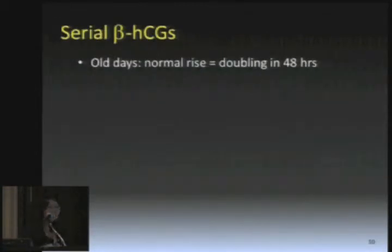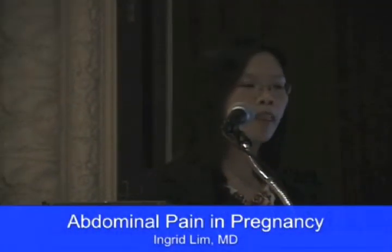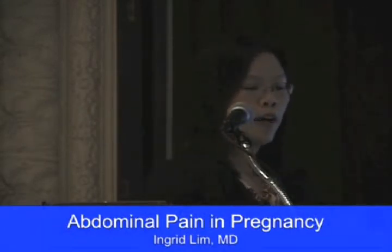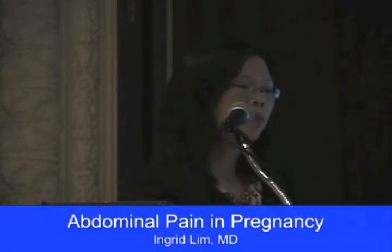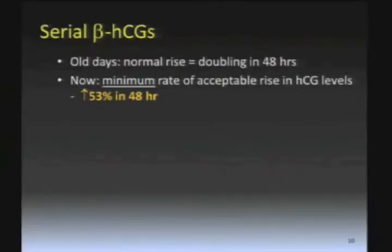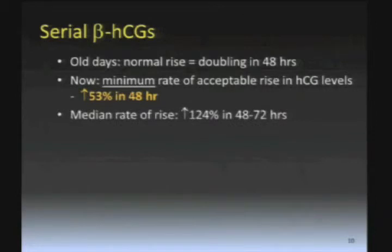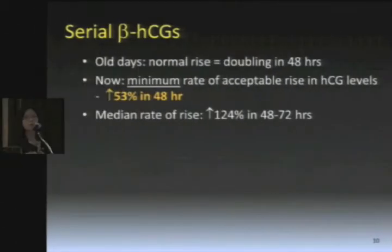We were all taught in medical school that if the beta HCG did not double in 48 hours, that signified an abnormal pregnancy or an ectopic. That is actually no longer the definition of a normal rise in beta. With newer assay technologies, the minimum acceptable rate of rise in HCG levels is actually an increase of 53% in 48 hours. The median rate of rise is still about 124% in 48 to 72 hours, and 85% of women still have a doubling of their beta in two to three days, but it's perfectly acceptable if they only have an increase of about half in 48 hours. That's a huge paradigm shift.